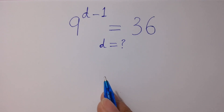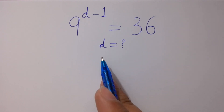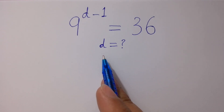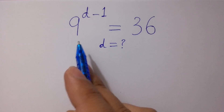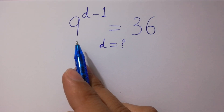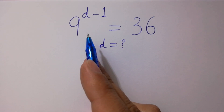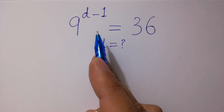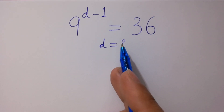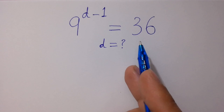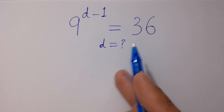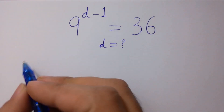Hello friends. Find the value of d if 9 to the power d minus 1 equals 36. Let's have a solution.